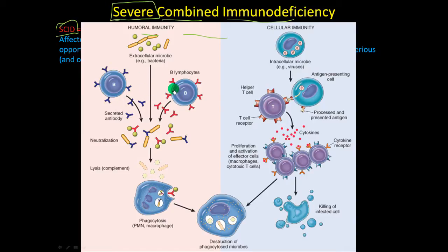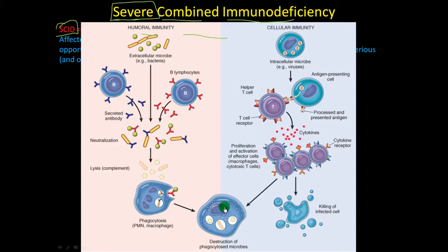In humoral immunity, B cells turn into plasma cells and start secreting antibodies. These antibodies neutralize microbes, which are then phagocytized by phagocytes and macrophages, leading to the destruction of the phagocytized microbes.